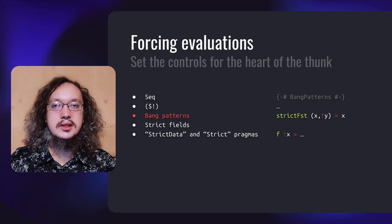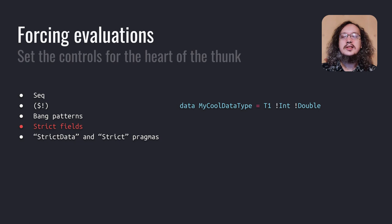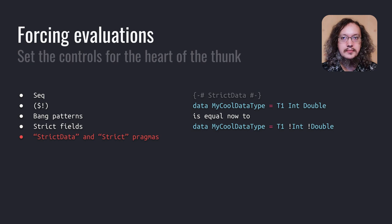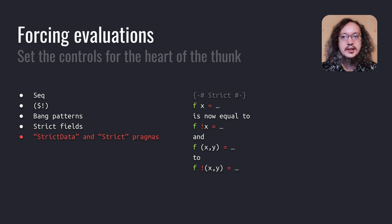Another way to add strictness is called strict fields. When you define your own data type, you may add an exclamation point in front of a field type. When the data constructor is applied, those fields will be evaluated to weak head normal form, guaranteeing that data in that field will always be in weak head normal form. Finally, we have two extensions: StrictData and Strict. The first turns all fields of data types defined in the module into strict fields — you can make a specific field lazy by adding a tilde in front of it. The second makes all binds in the module strict, equivalent to putting an exclamation point before every outermost pattern of all pattern matches in the module.